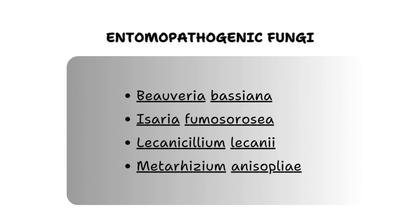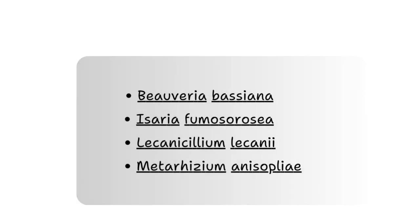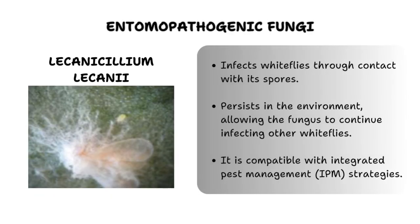The next category of biological control is the use of entomopathogenic fungi. Various entomopathogenic fungi can be used, including Beauveria bassiana, Isaria species, Lecanicillium lecanii and Metarhizium anisopliae. In this video we will focus on Lecanicillium lecanii, also known as Verticillium lecanii — a naturally occurring fungus used for biological control of whiteflies. This entomopathogenic fungus infects and kills whiteflies by penetrating their cuticles and proliferating within their bodies, ultimately leading to their demise.